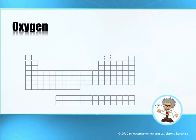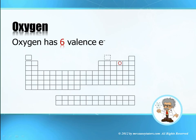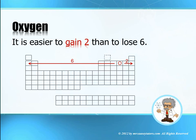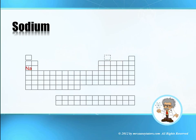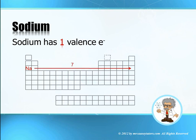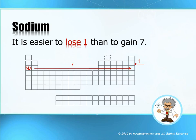Let's look at oxygen on the periodic table. Oxygen has six valence electrons. Is oxygen going to lose six electrons or gain two? Well, it's easier to gain two. Sodium has one valence electron — will it gain seven or will it lose one? The easiest thing to do is to lose one. So it's easier to lose one than to gain seven.